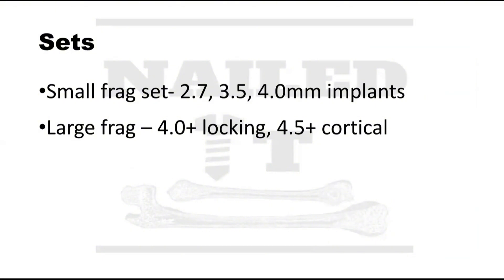Once you're in more fracture and trauma cases, you'll encounter different sets in the operating room — small fragment sets versus large fragment sets. The large fragment set has tools with a bigger diameter for bigger bones like the distal femur, while small fragment sets are for smaller bones like the distal fibula. Small frag sets typically involve implants like 2.7 mm or 3.5 mm screws, whereas large frag sets may have 5.5 mm or 6.0 mm screws. Hopefully this gave you an overview of the different plate types and how a plate can function.